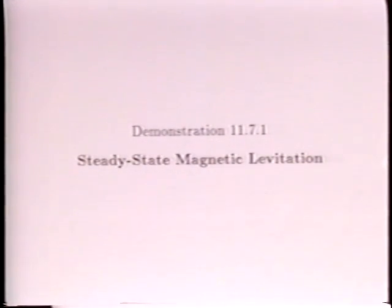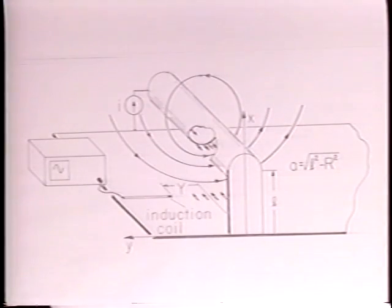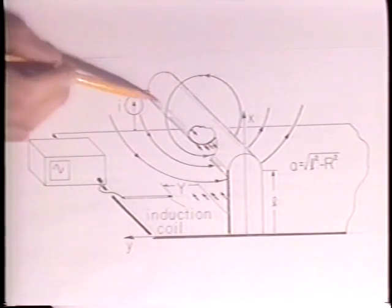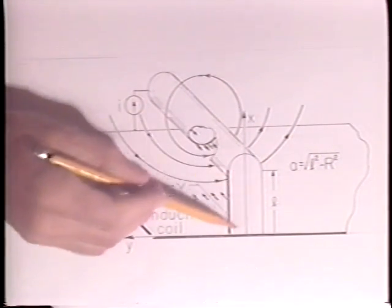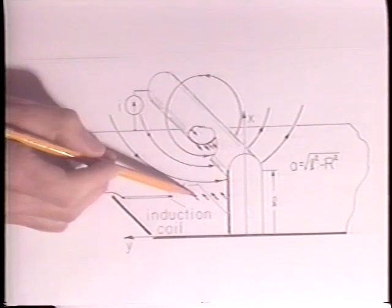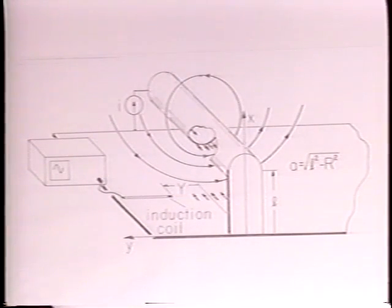The steady state magnetic levitation of current carrying conductors over a ground plane demonstrates magnetic forces due to conduction currents. This cylindrical conductor carries a current I. The current is returned in the conducting plane just below. It is alternating at a high enough frequency that both the conductor and the ground plane act as perfect conductors.